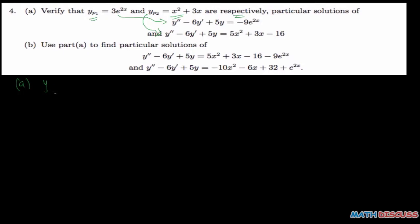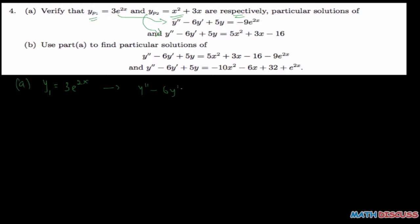I'm going to start by saying this is our equation. I want to check that y1, which I'll call y1 instead of yp1, equals 3e to the power 2x. I want to show that this is a solution of y'' minus 6y' plus 5y equals minus 9e to the power 2x. That's what I want to show.